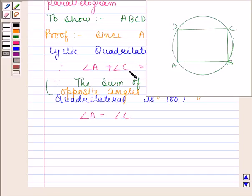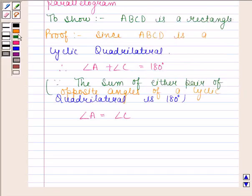And we know that angle A plus angle C is equal to 180 degrees. So this implies both angle A and angle C equal 90 degrees.